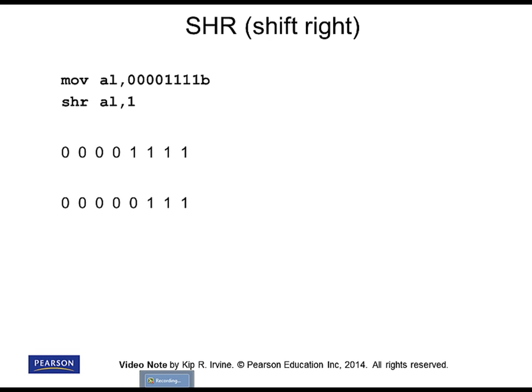Let's turn our attention now to the shift right instruction, which moves binary bits in a number to the right direction. Here I've set up the AL register with four binary bits in the lower part of the number and I'm going to shift it to the right. Each bit moves over one position, and the last bit on the right-hand side is shifted into the carry flag and disappears from the original number. Meanwhile, the highest bit is filled with a zero — that always happens with the shift right instruction.